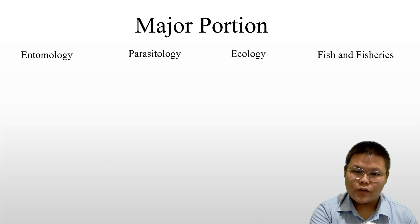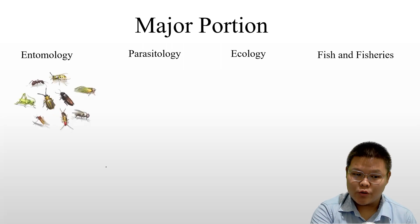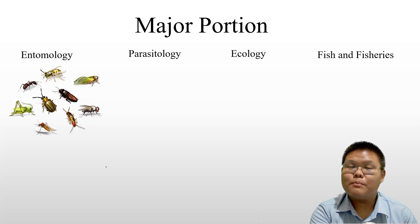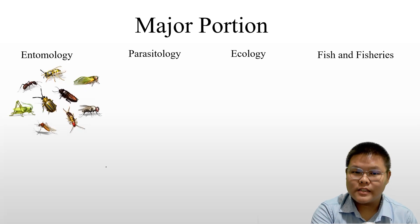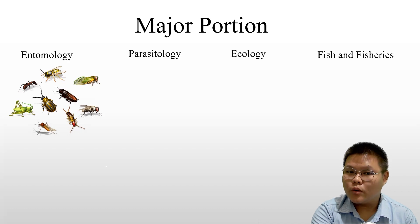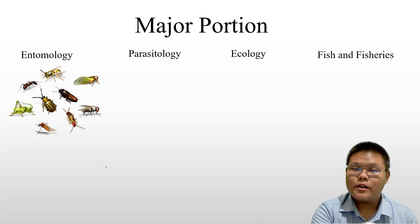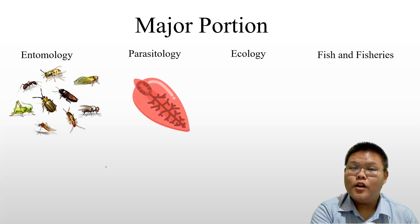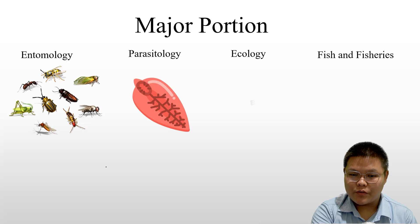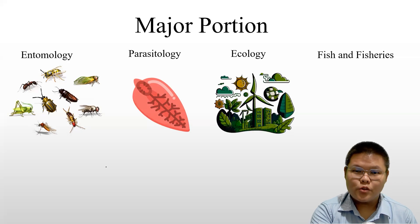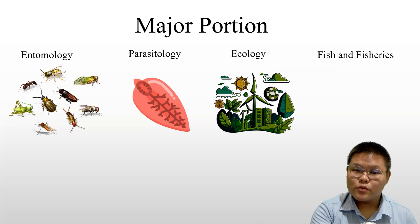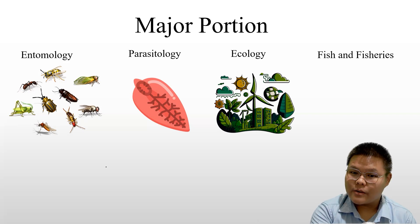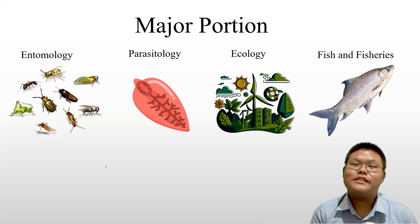Entomology simply relates to the study of insects. Parasitology deals with parasites and their study. Ecology studies the relationship of living beings with the environment. Fish and Fisheries is the study of fish-related branches.